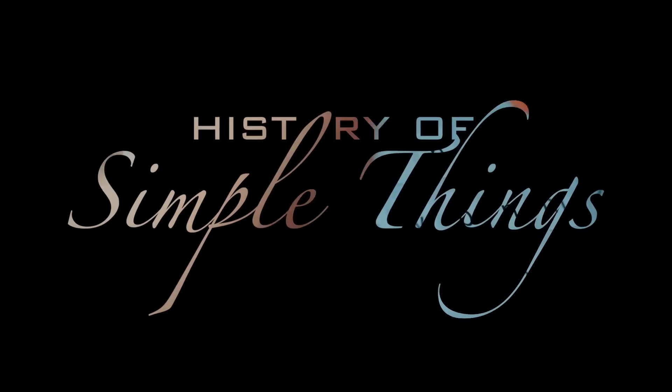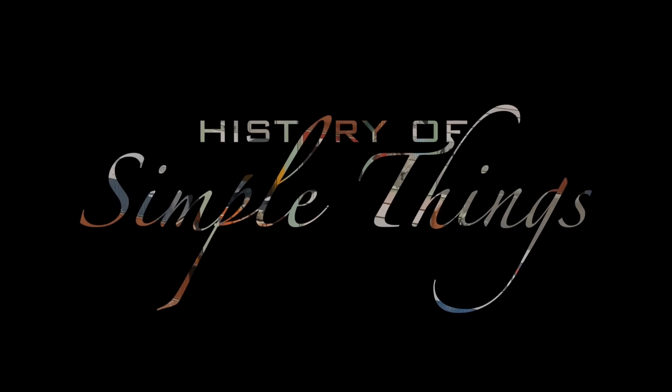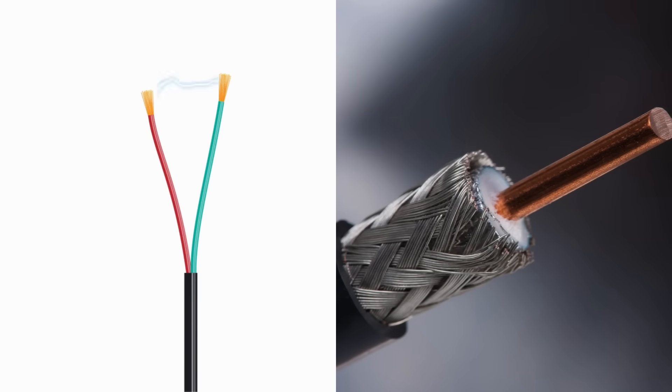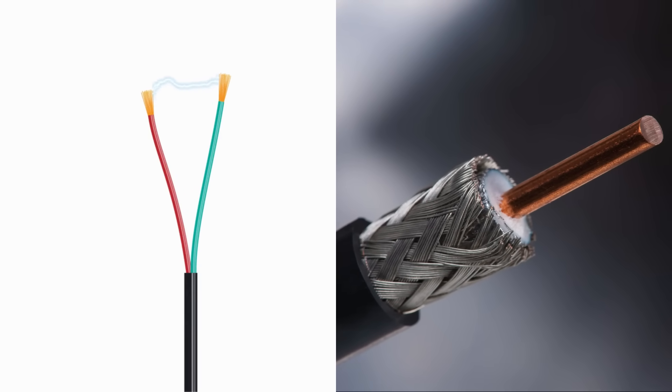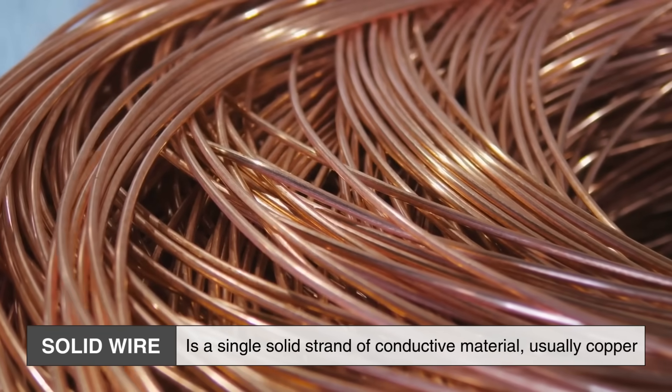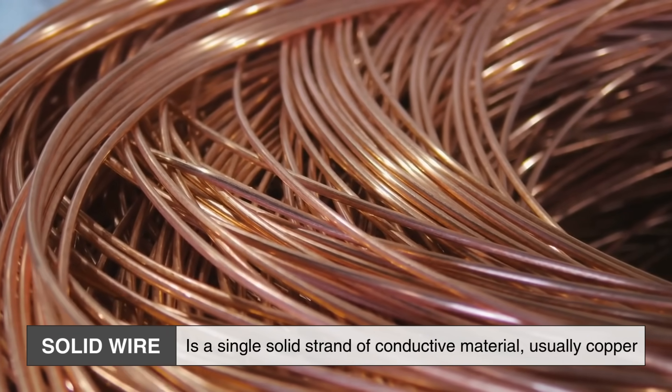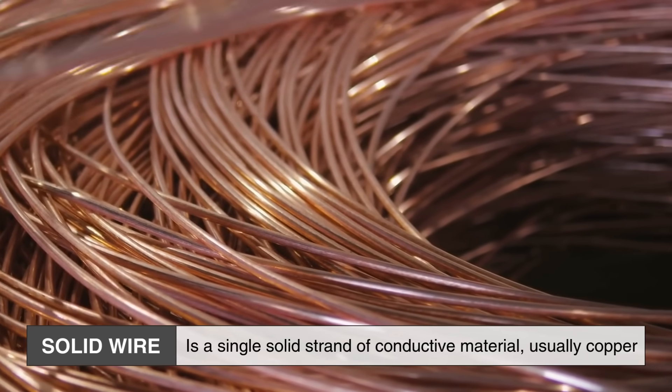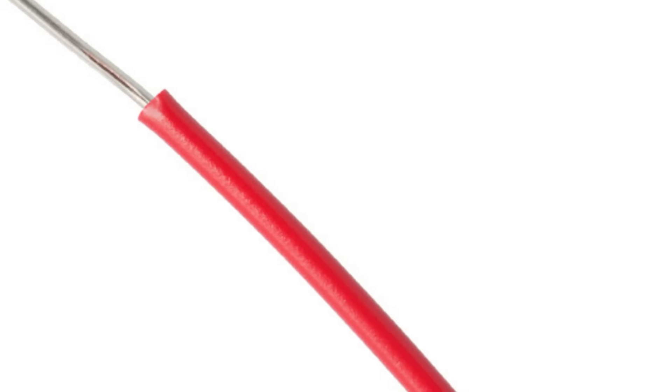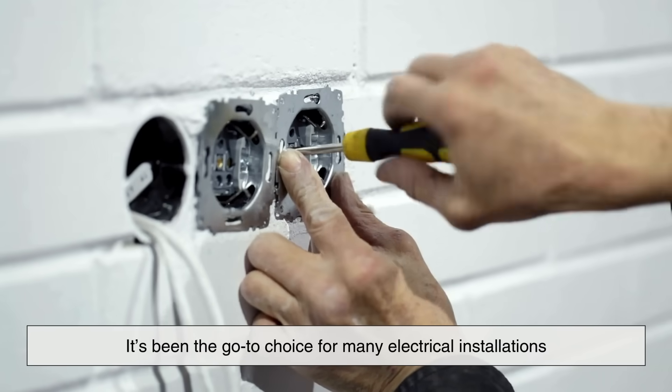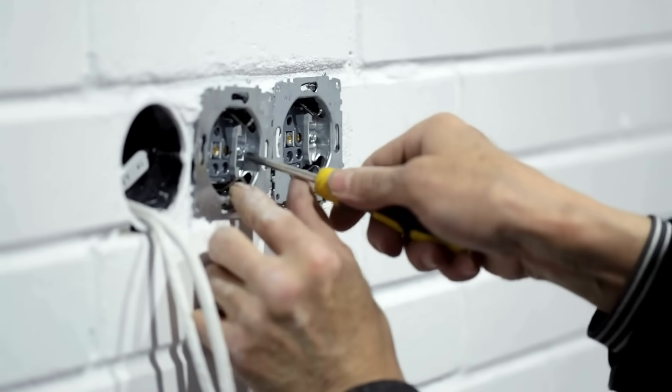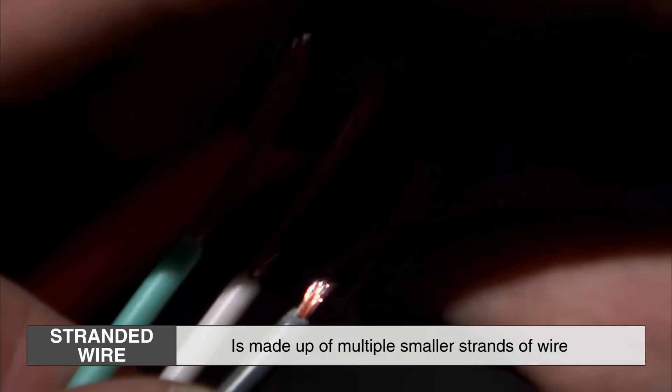Let's start by defining what exactly these two types of wires are. Solid wire, just like the name implies, is a single solid strand of conductive material, usually copper. It's simple, it's uniform, and it's been the go-to choice for many electrical installations, especially in residential wiring. On the other hand, stranded wire is made up of multiple smaller strands of wire twisted together to form one larger conductor.